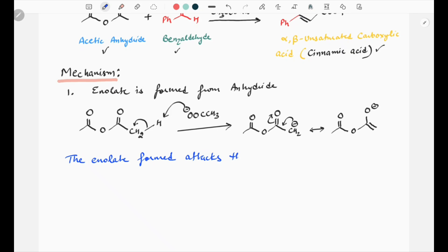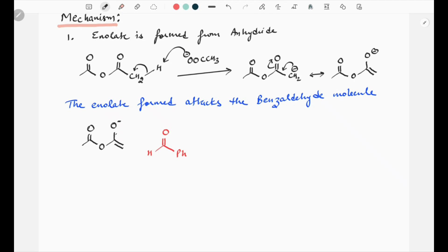...attacks the benzaldehyde molecule as shown. Now this O minus pushes the electron backwards, as a result C double bond O is again formed and these pi electrons attack the carbonyl carbon of the benzaldehyde molecule. As a result, electron density is shifted to oxygen. What we get is a reversible process in which the reversible reaction is favored.